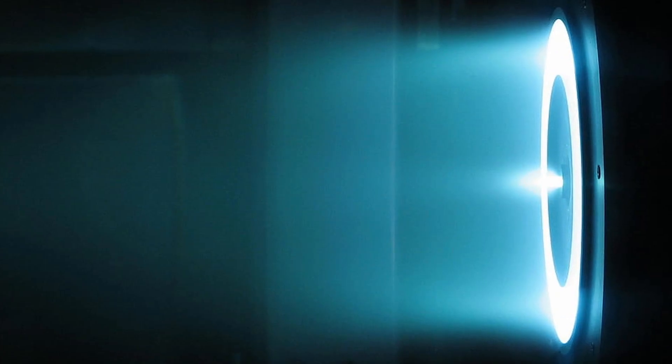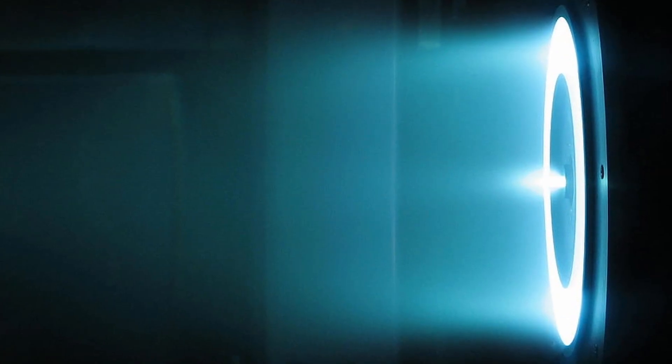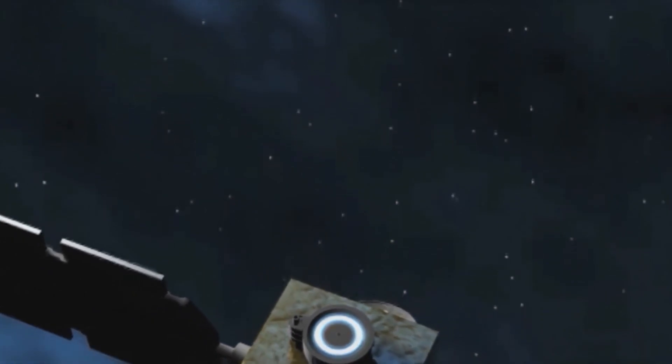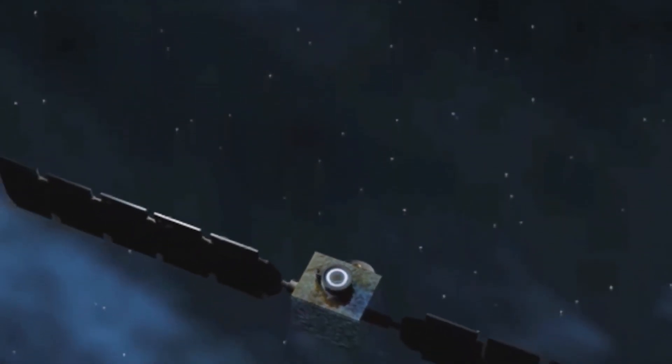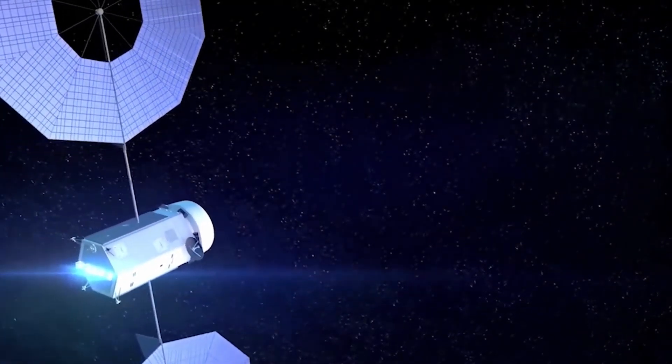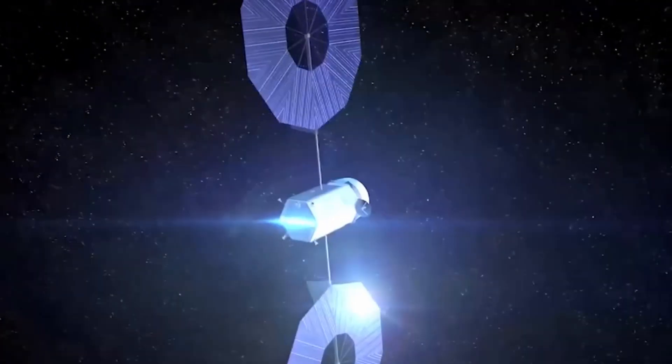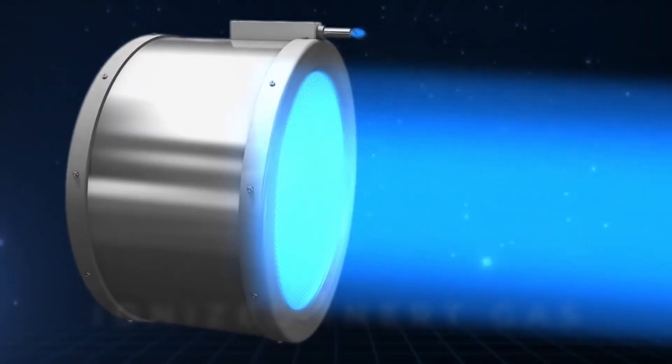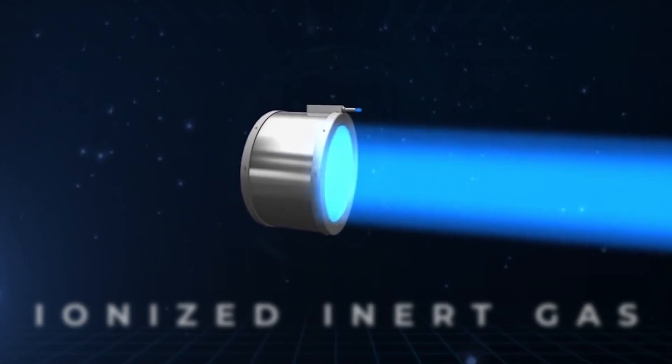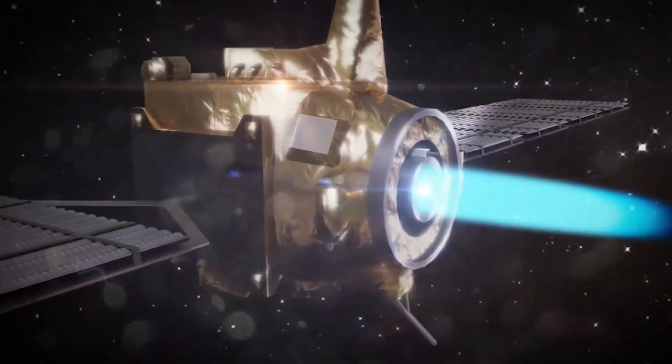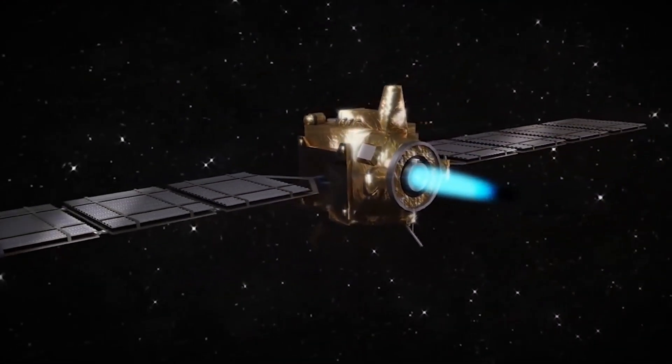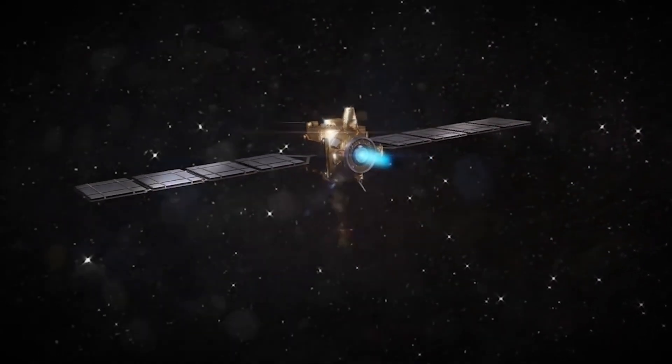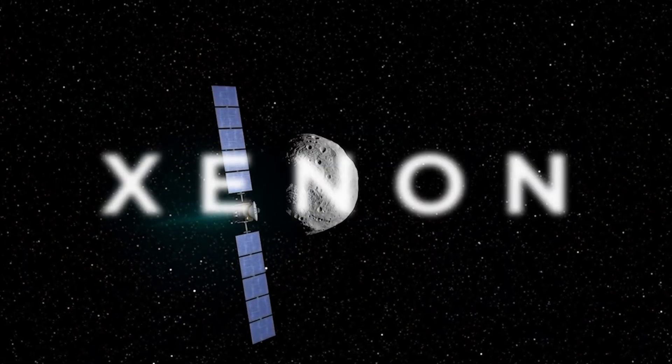The principle of its operation is simple and complex at the same time. It consists in the ionization of gas which is accelerated by an electrostatic field to obtain reactive thrust and acceleration of the spacecraft according to Newton's third law. The fuel or working body of such an engine is ionized inert gas. However, not all noble gases should be used as fuel. So, as a rule, the choice of scientists and researchers falls on xenon.